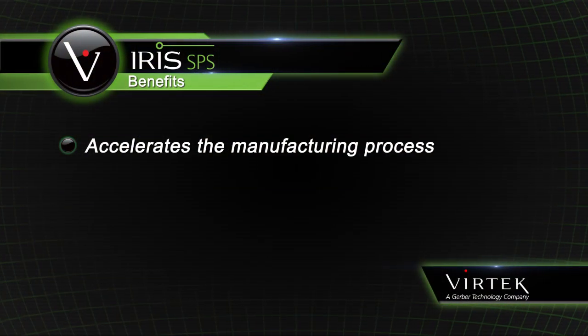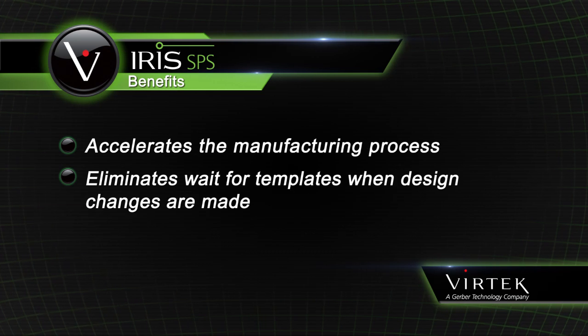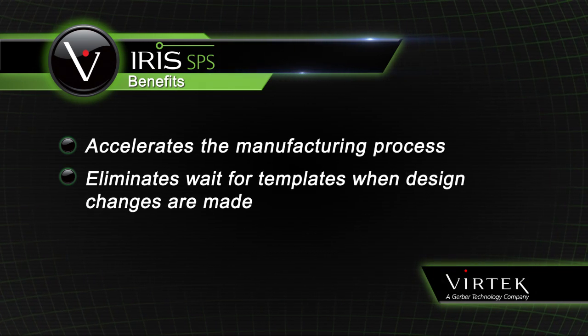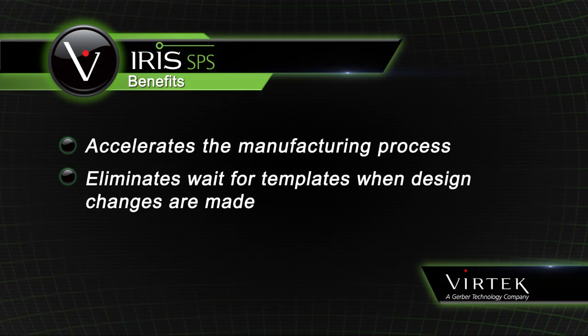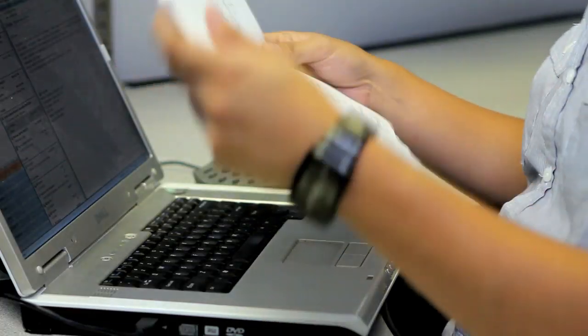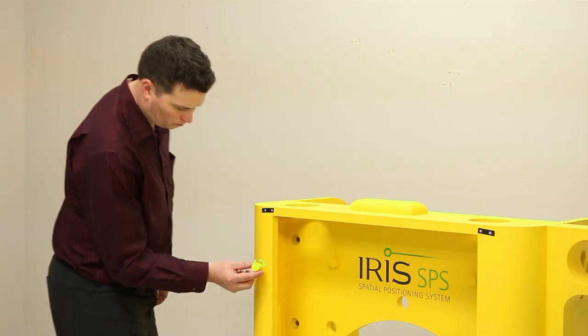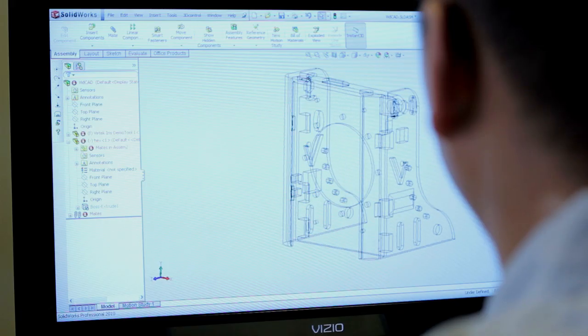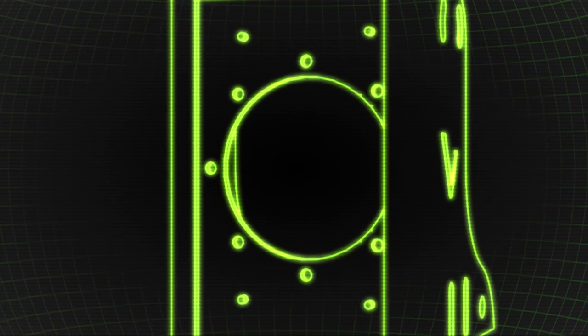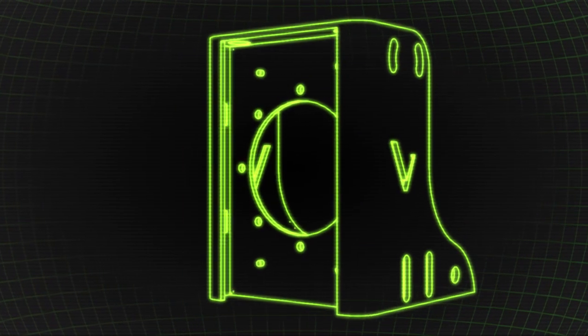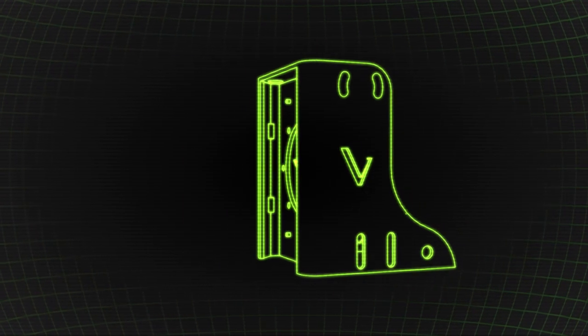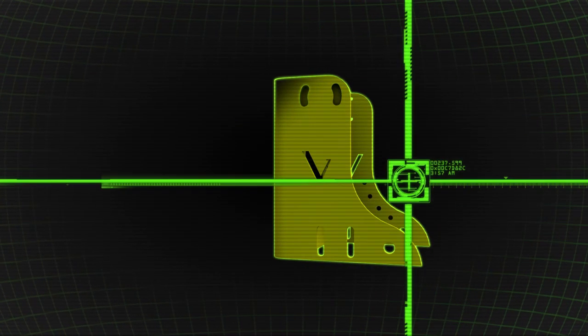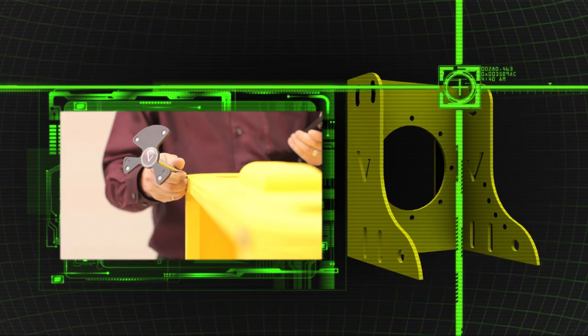It accelerates the manufacturing process by eliminating the wait for templates at the onset of a project or when design changes are made. Quality is assured with IRIS because the final assembled product exactly matches the as-designed specs every time. The virtual tooling process begins with the engineer's CAD model. Alignment datums are chosen based on the design's call-outs to ensure accuracy and repeatability.